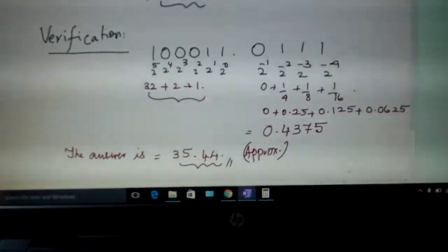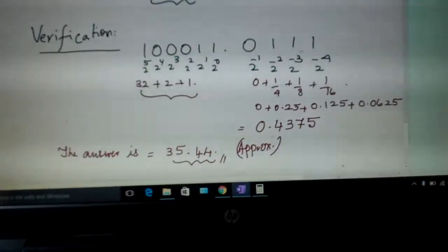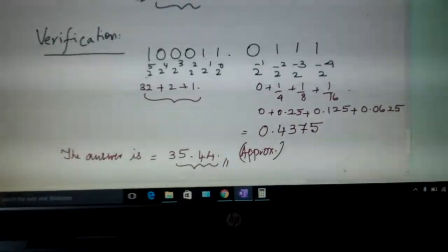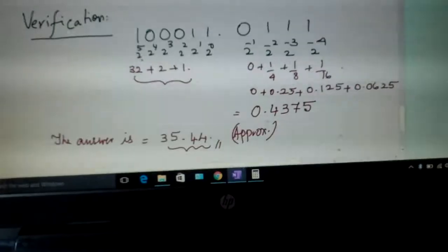Write them in the reverse order. And how do you verify this? Write 100011.011. Multiply with this: 0, 1, 2, 3, 4, 5. Five is also there. Earlier it was only up to 4. Now we are taking 2^5 also.